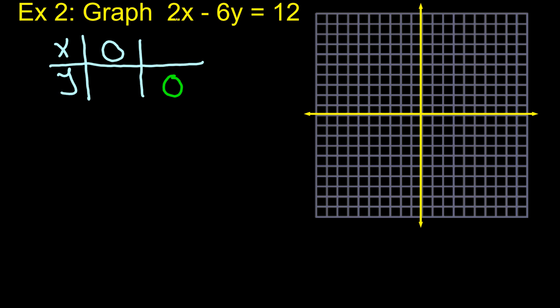So let's start with when X is 0. 2 times 0 is 0. So that first term is just 0. So then we end up with negative 6Y equals 12. So if I want to solve for Y, I'm going to divide by negative 6. And I get Y equals negative 2. So when X is 0, the Y value has to be negative 2.